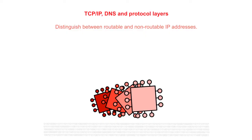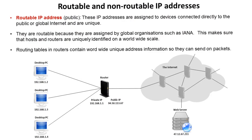In this short video we're going to make sure you understand the difference between routable and non-routable IP addresses. A routable IP address is basically a public IP address. These are IP addresses that are assigned to devices connected directly to the public or global internet, and therefore they have to be completely unique — no two devices can have the same IP address.